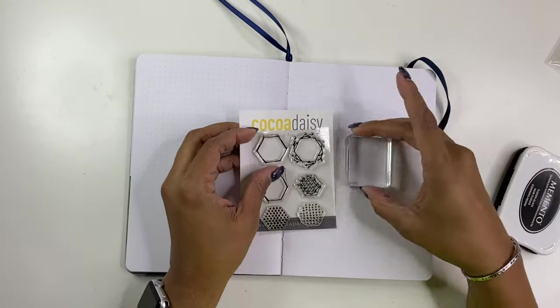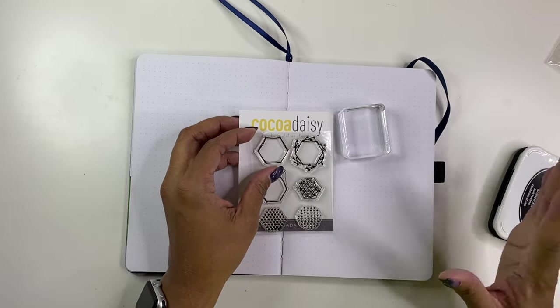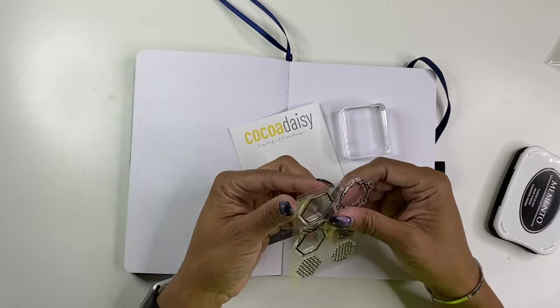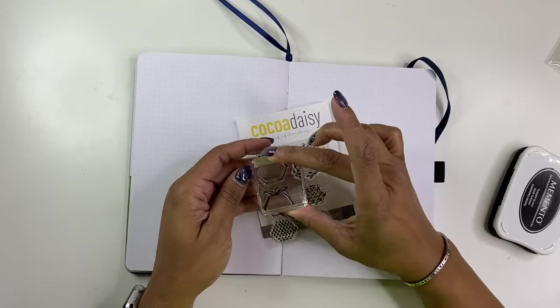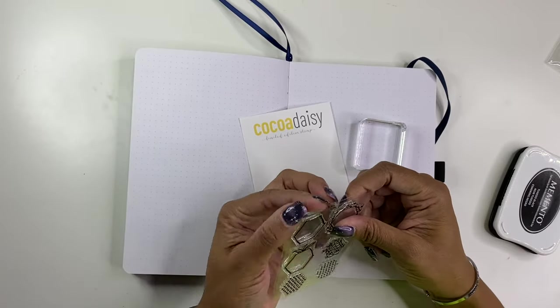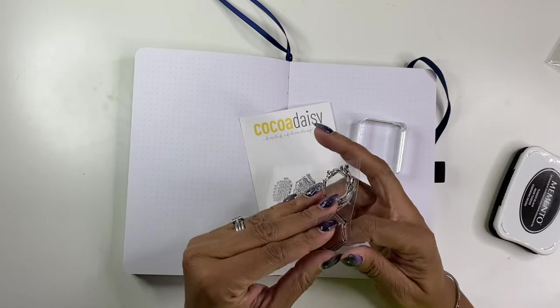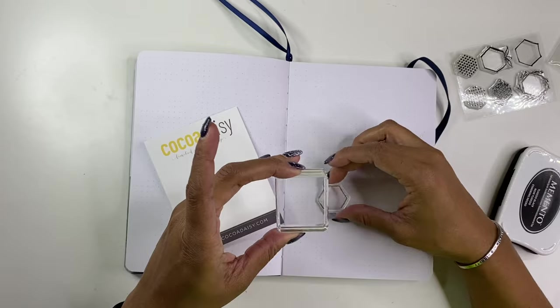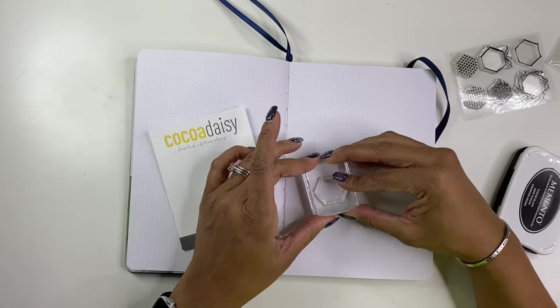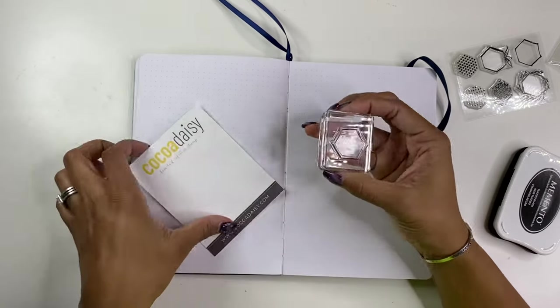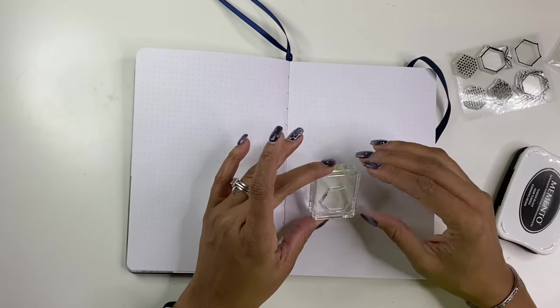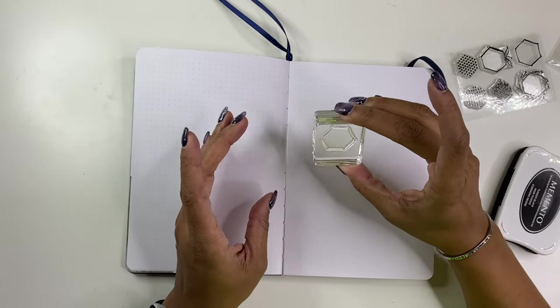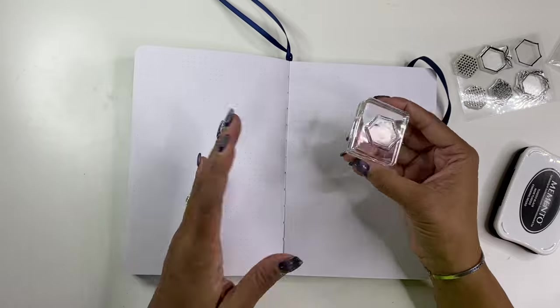So with the acrylic stamps, you want to find a block that's going to be about the same size of your stamp. I feel like when you get the blocks that are too big, you run into more of an error situation. So I try to find a block that's fairly relative in size to the actual stamp. You don't want one too big and you don't want one that's way too small.